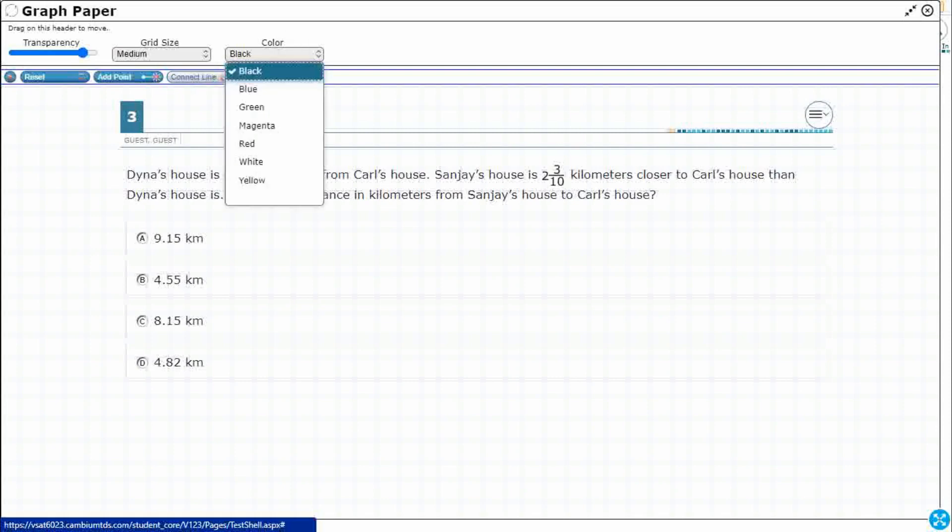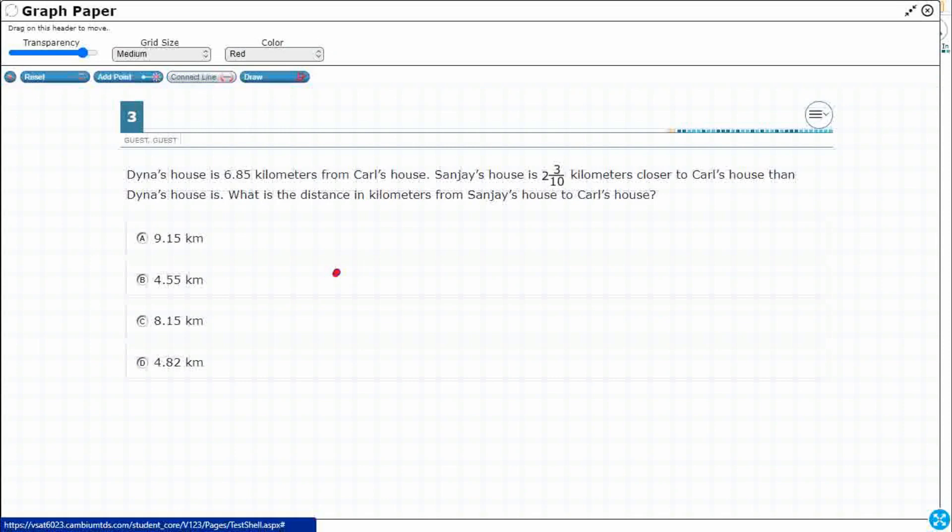And so I'm going to use kind of a connect line here just to draw a straight line. And we know where at least two of the houses are. And so let me just draw those for you real quick.